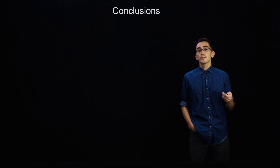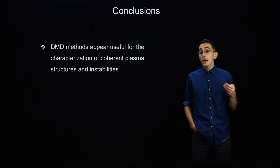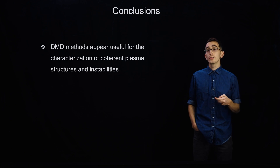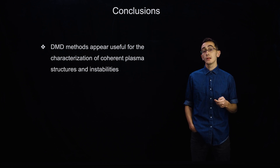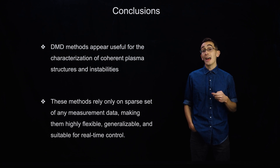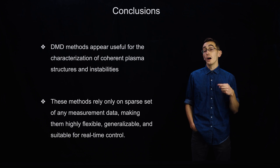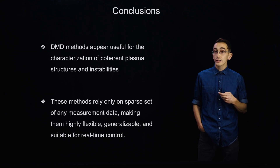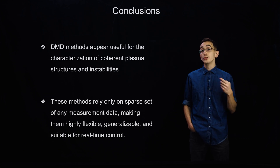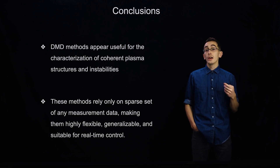That wraps up the main results. In conclusion, DMD methods appear useful for the characterization of coherent plasma structures and instabilities. These methods rely only on a sparse set of measurement data, making them highly flexible and generalizable. Because they are computed in a low-dimensional space very quickly, they are suitable for real-time control. Thanks a lot for listening, and please email me with any questions.